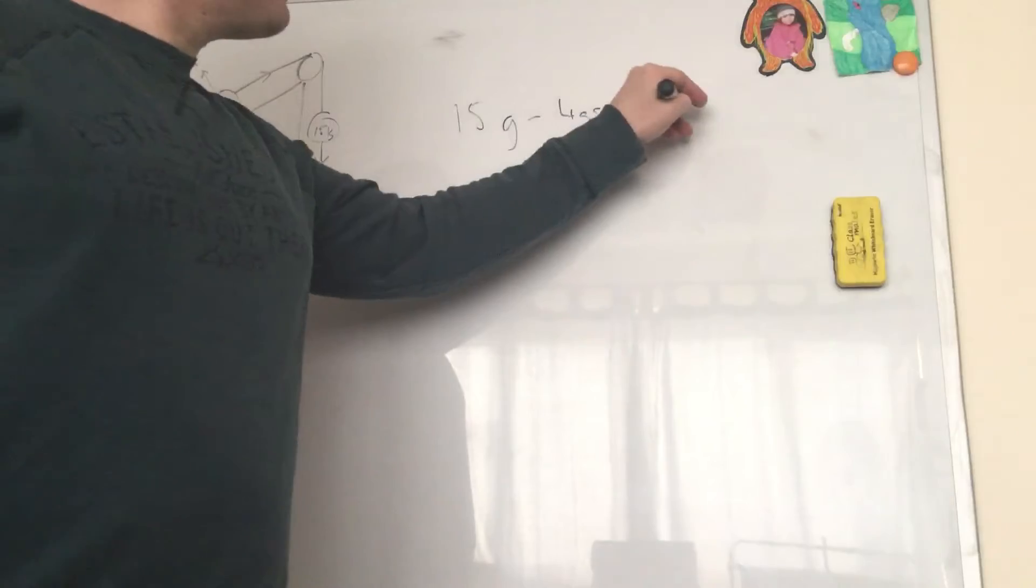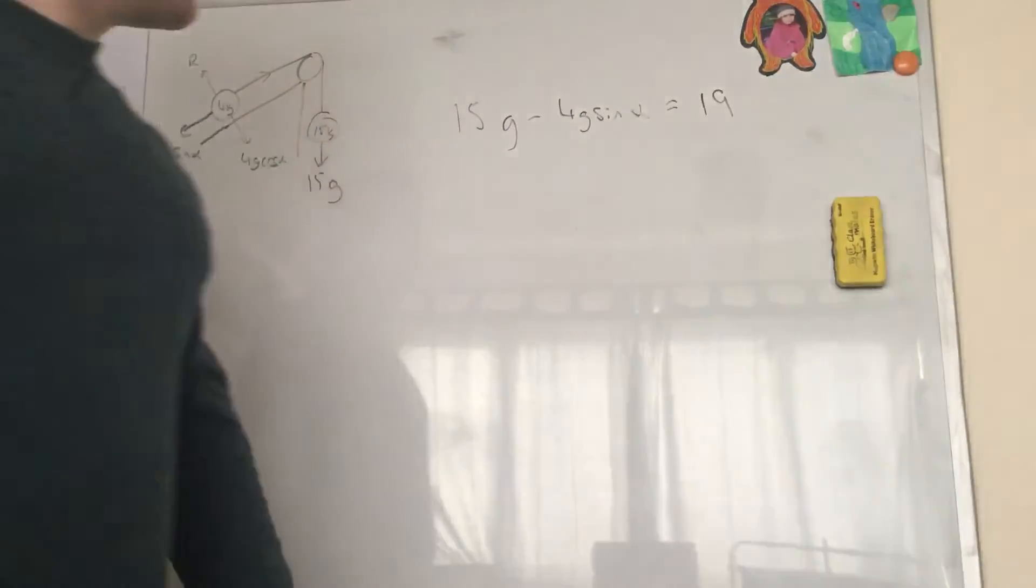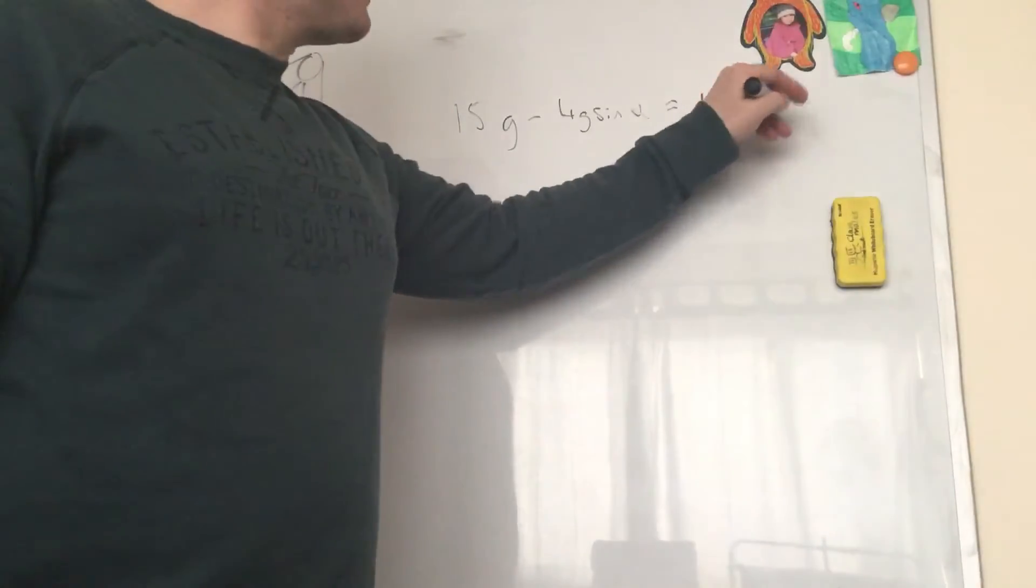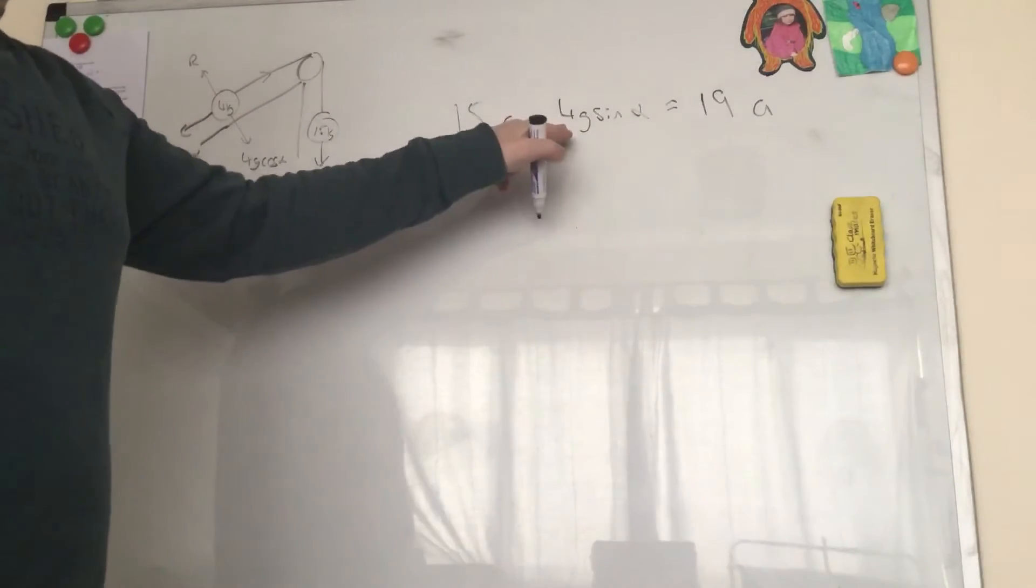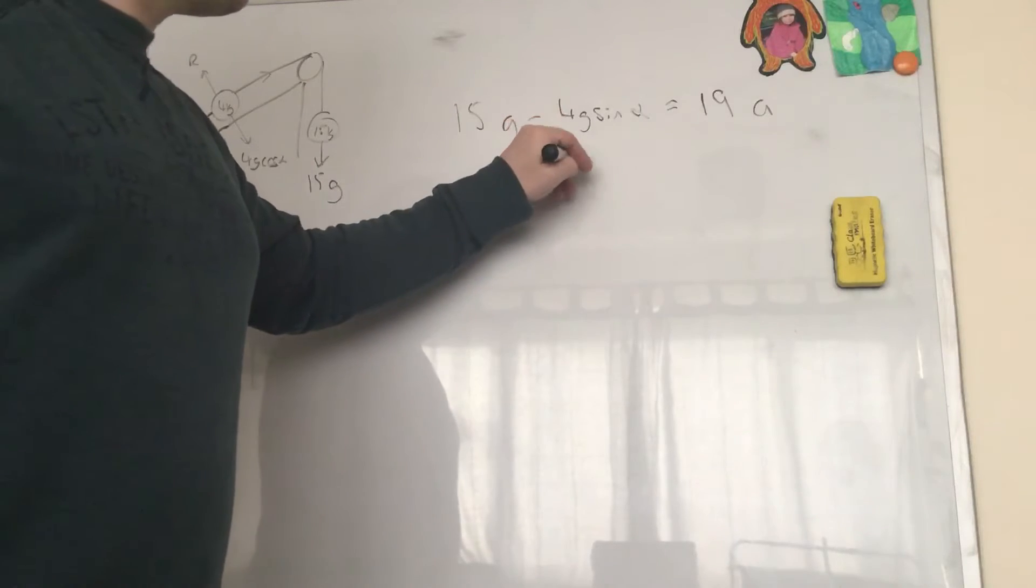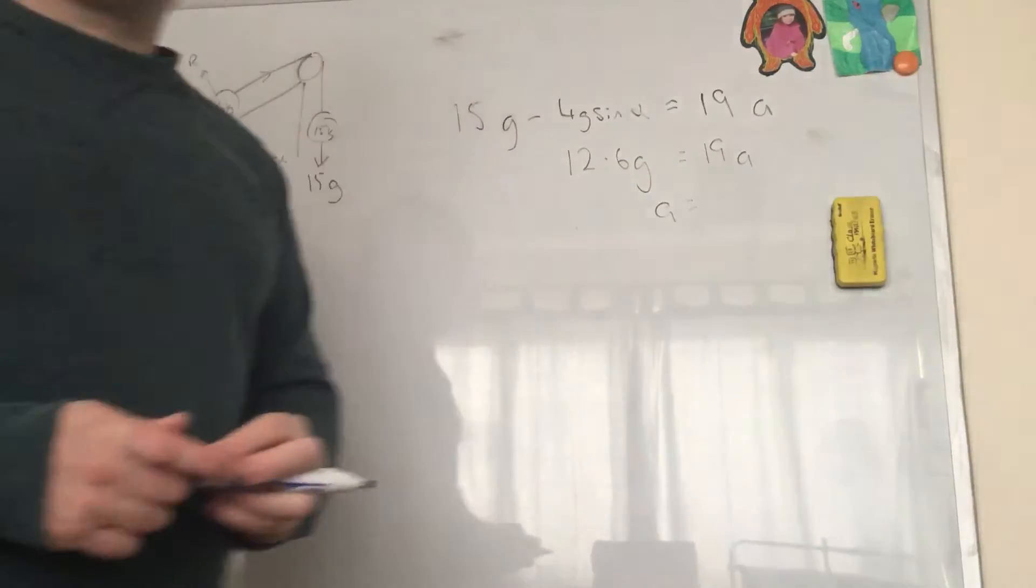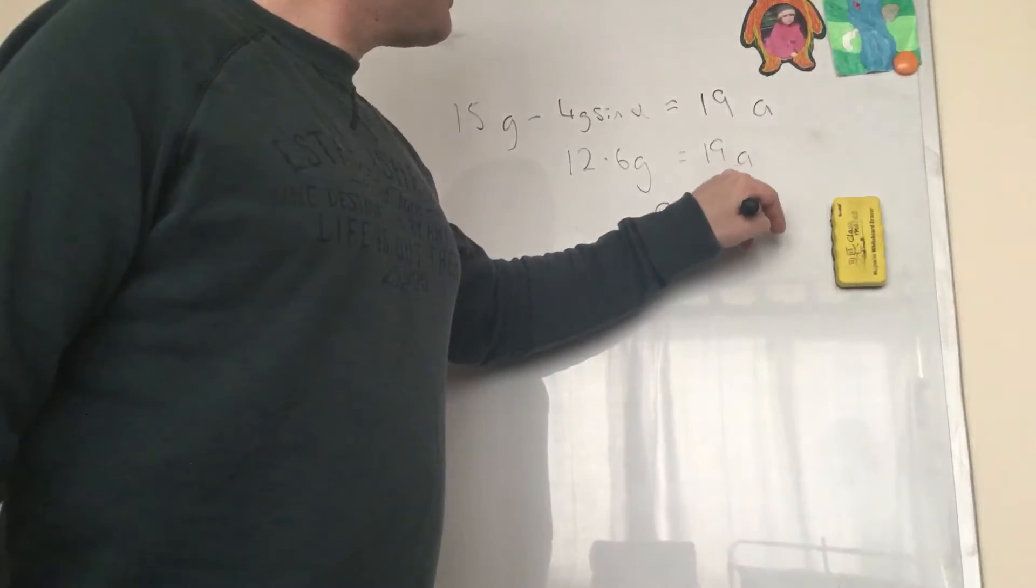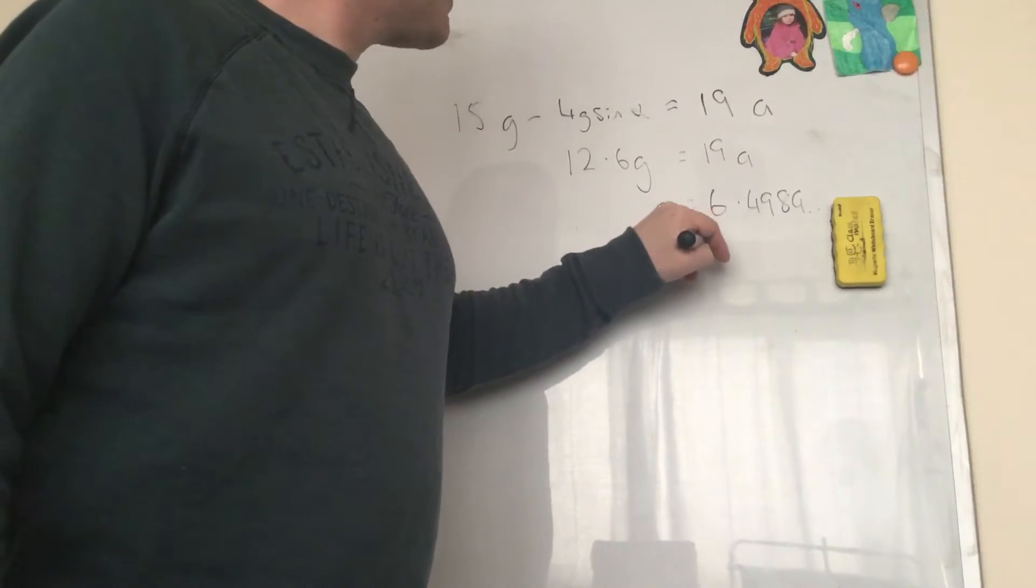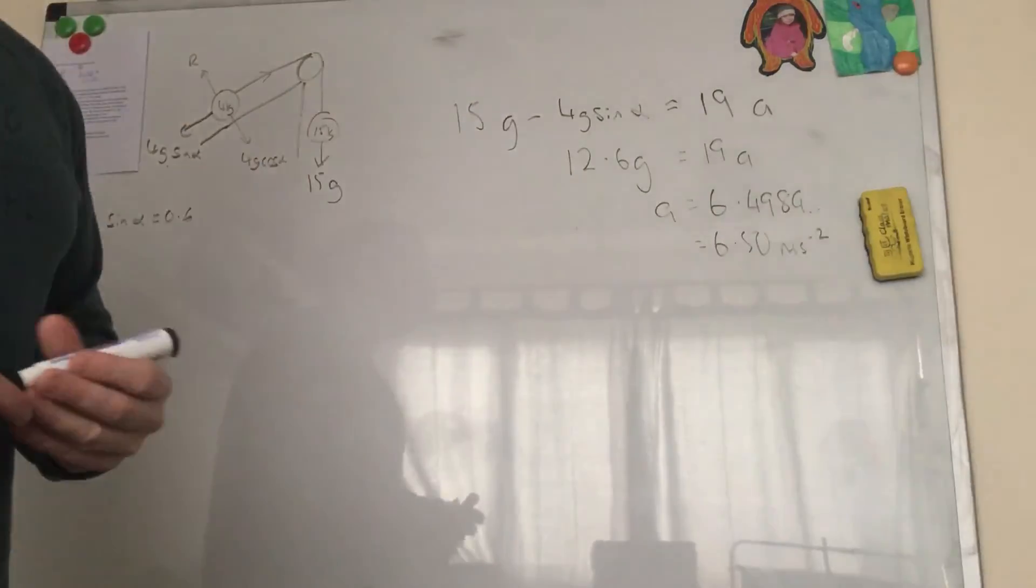And that's equal to the total mass of a system which is 15 plus 4 which is 19 times the acceleration a. And 4G sine alpha is 2.4g, so 15g take away 2.4g is 12.6g equals 19a. So we do a is 12.6g divided by 19 and we get, when I finally get to the right answer, we get to the right answer 6.4989 dot dot dot, so it rounds to 6.50 meters per second squared.